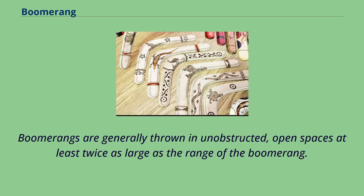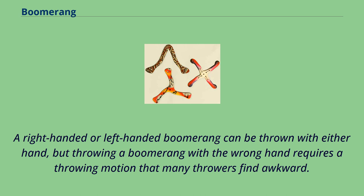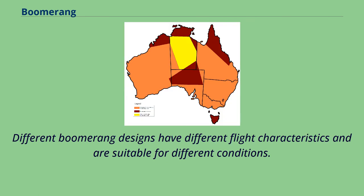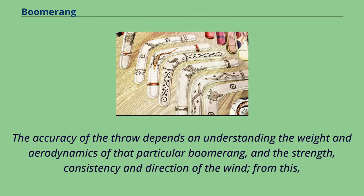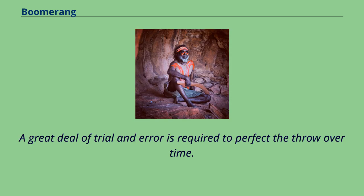Boomerangs are generally thrown in unobstructed, open spaces at least twice as large as the range of the boomerang. The flight direction — left or right — depends upon the boomerang, not the thrower. A right-handed or left-handed boomerang can be thrown with either hand, but throwing with the wrong hand requires a motion many throwers find awkward. The thrower chooses the angle of tilt, the angle against the wind, the elevation of the trajectory, the degree of spin, and the strength of the throw. A great deal of trial and error is required to perfect the throw over time.